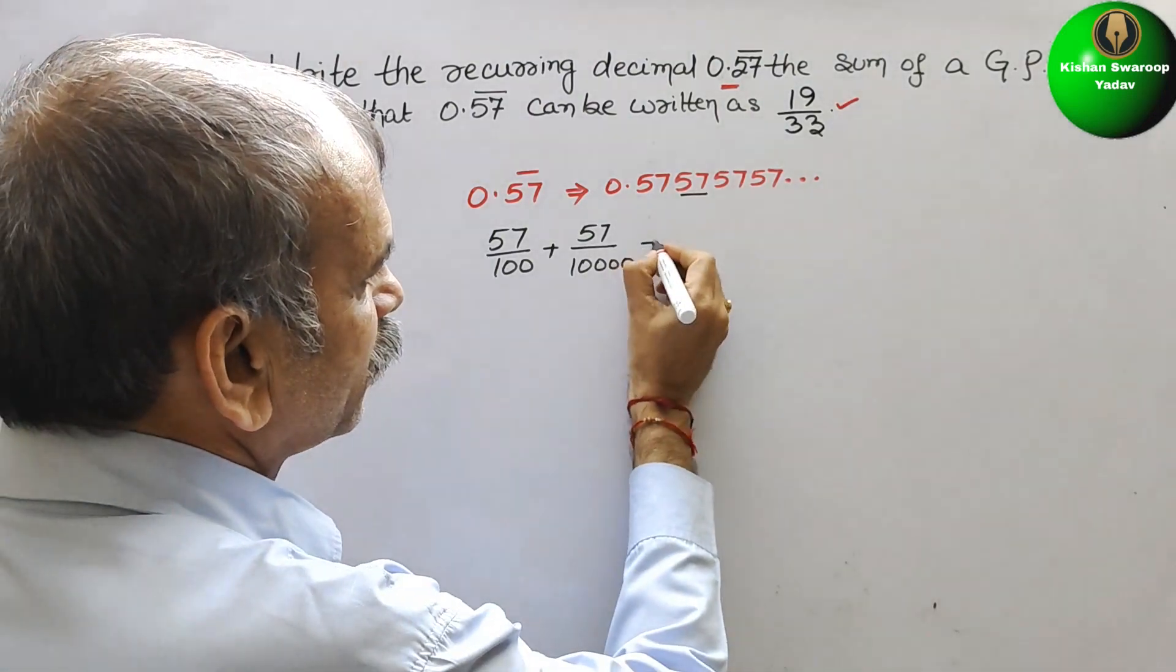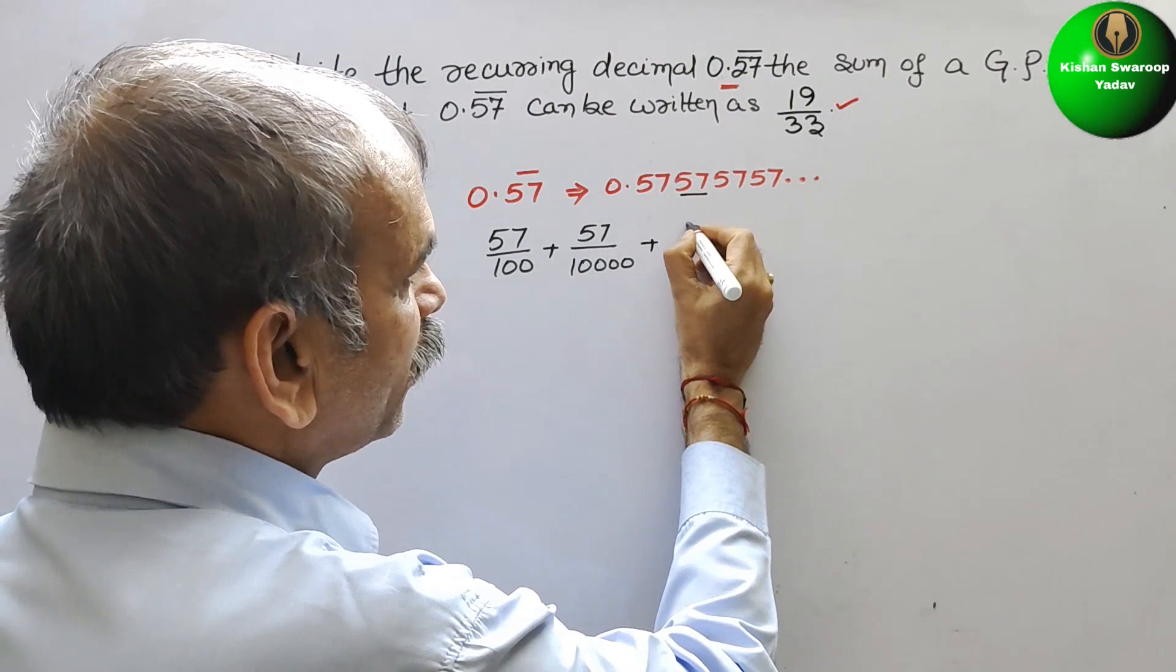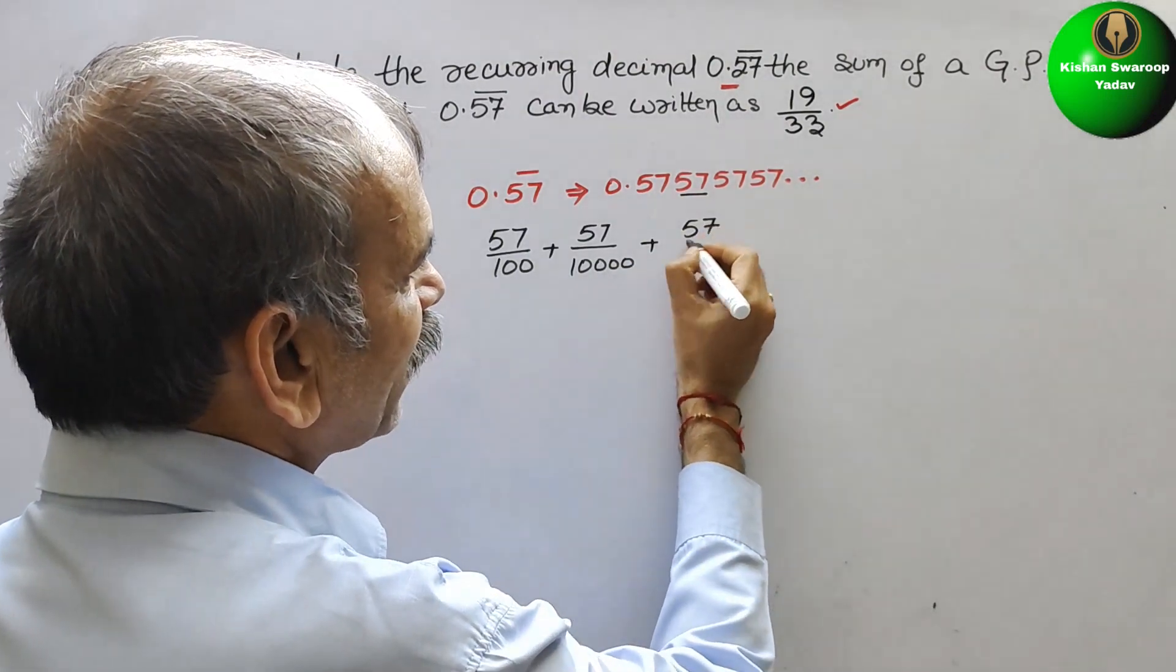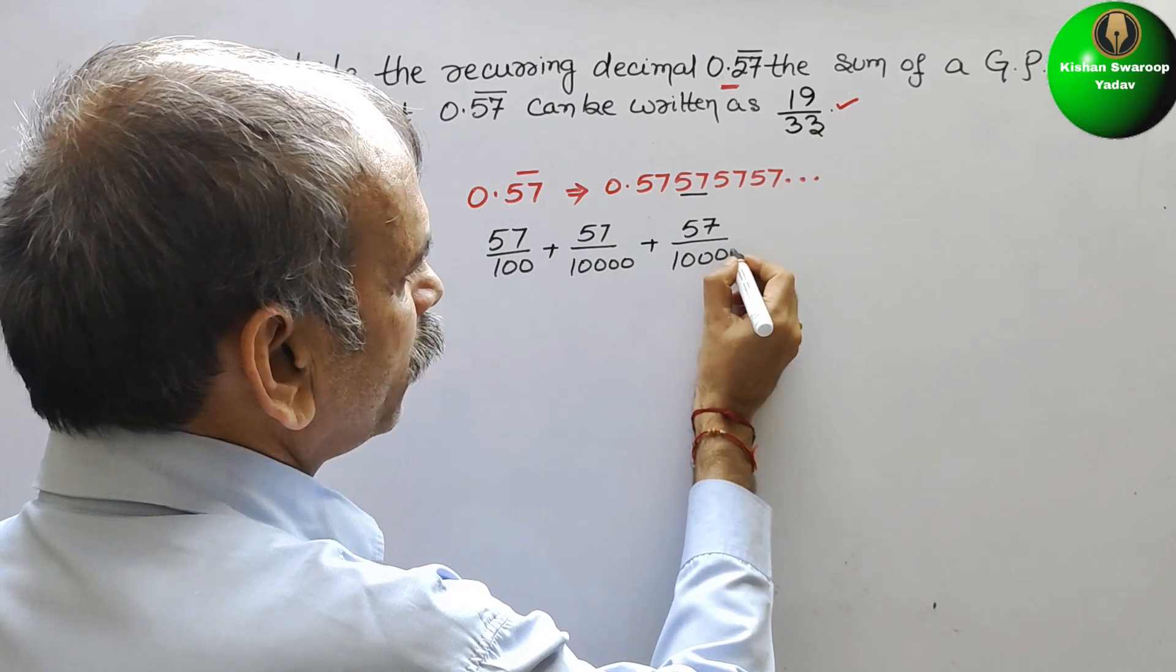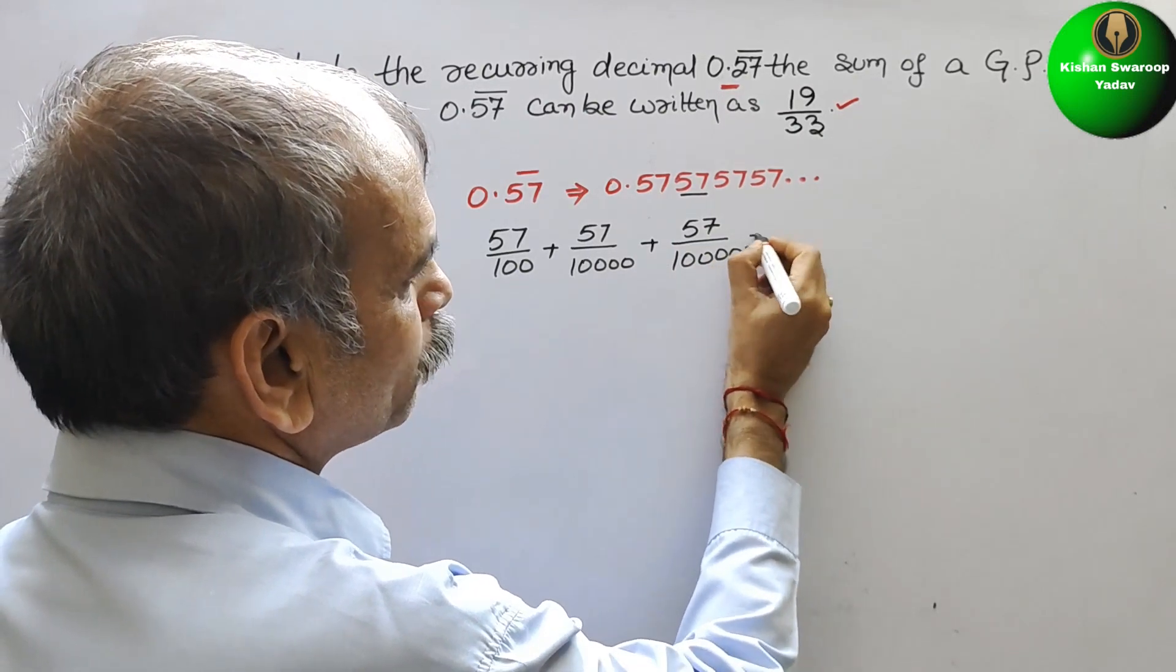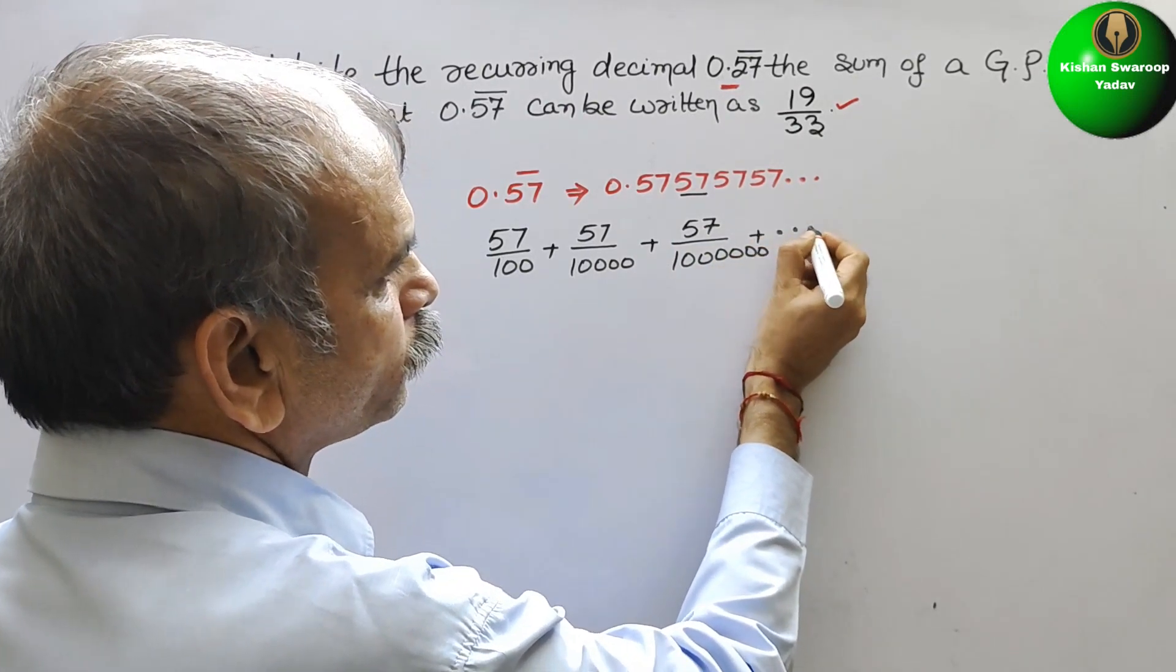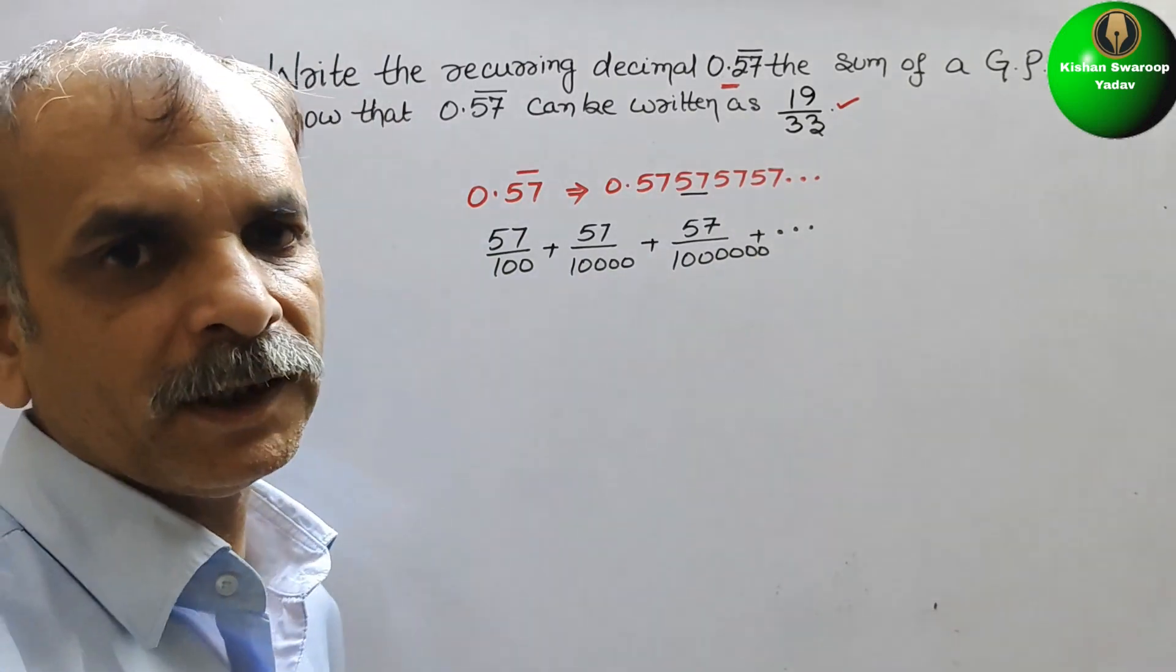Plus, next comes your 57 by 1,000,000, and so on. Like this it will be.